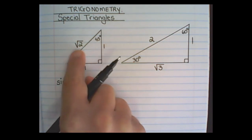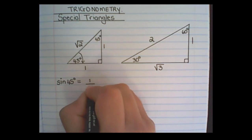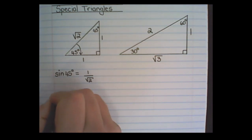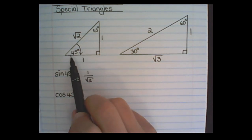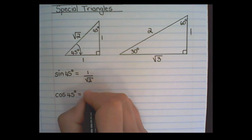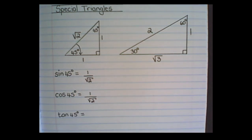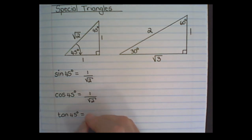So the opposite is one and the hypotenuse is the square root of two, giving sine 45 = 1 over √2. Then the cosine of 45 degrees: cos is adjacent over the hypotenuse, so it's also 1 over √2. Next, the tan of 45 degrees, which is opposite over adjacent — so at 45 degrees it's one over one, which gives us one.